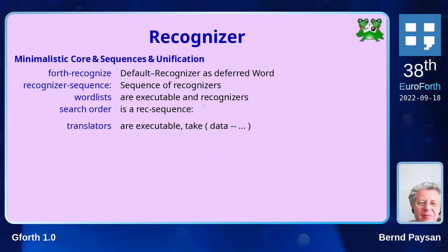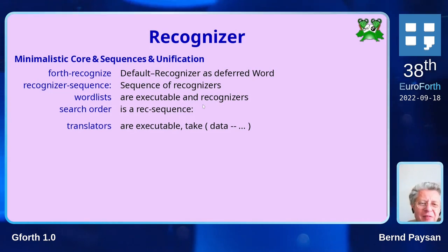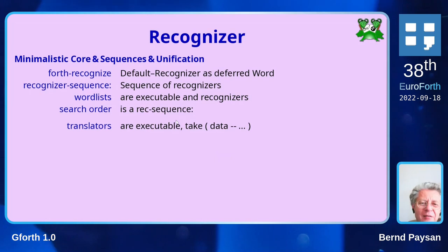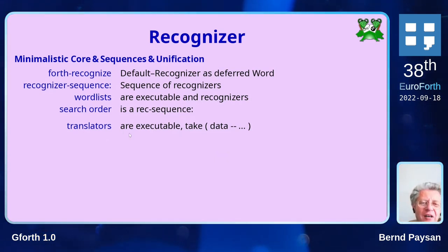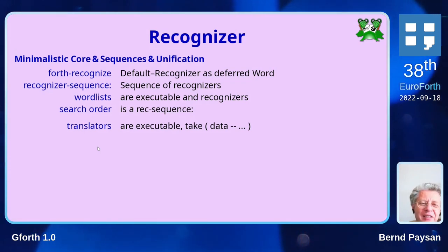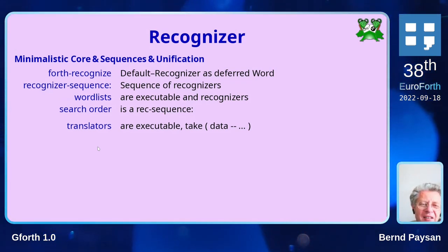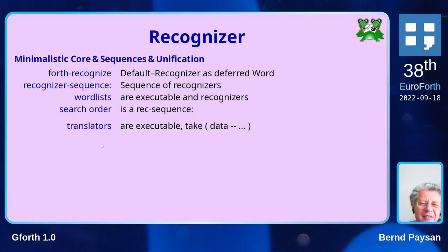This was found to be the most elegant approach with recognizers and works very well. We have extensions to the translator so you can add more semantics as a state beyond interpretation, compilation, and postpone. For example, we have a config.fs which parses config files and uses this extension to have a config state — config semantics typically store things in variables.